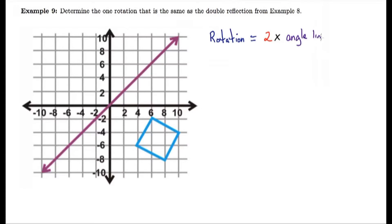The amount of rotation is going to be two times the angle of the lines of reflection. So basically the x-axis and this y equals x line. So I'm going to put it in here in red. That angle, if we can find that angle, we just double it.